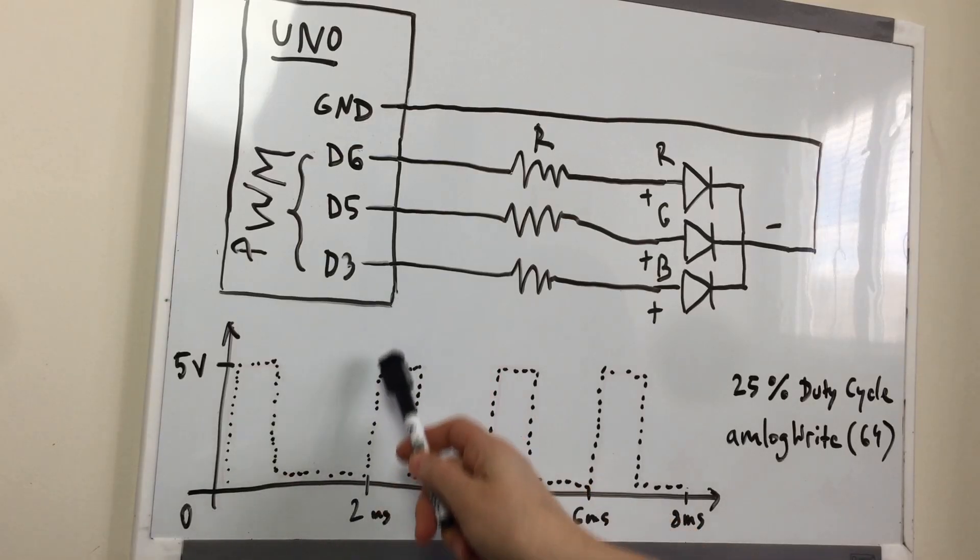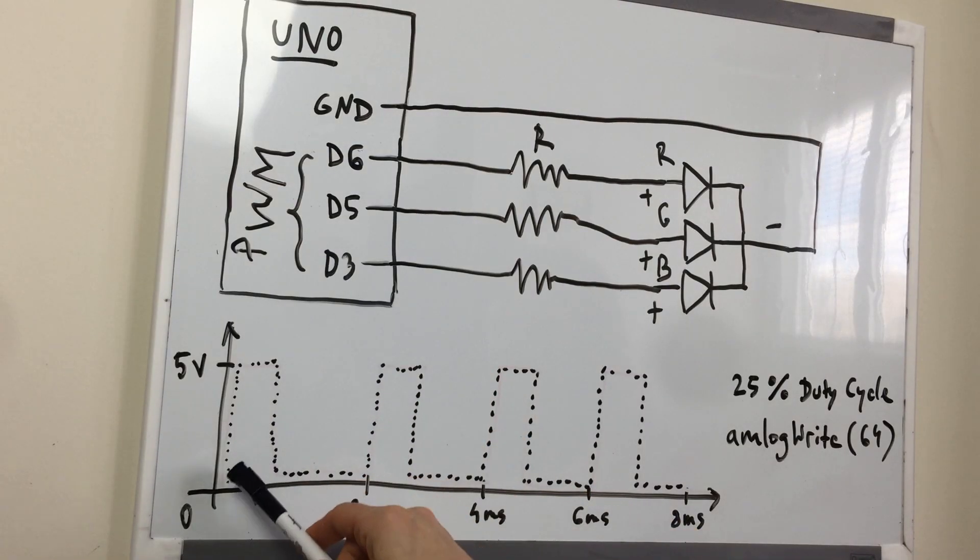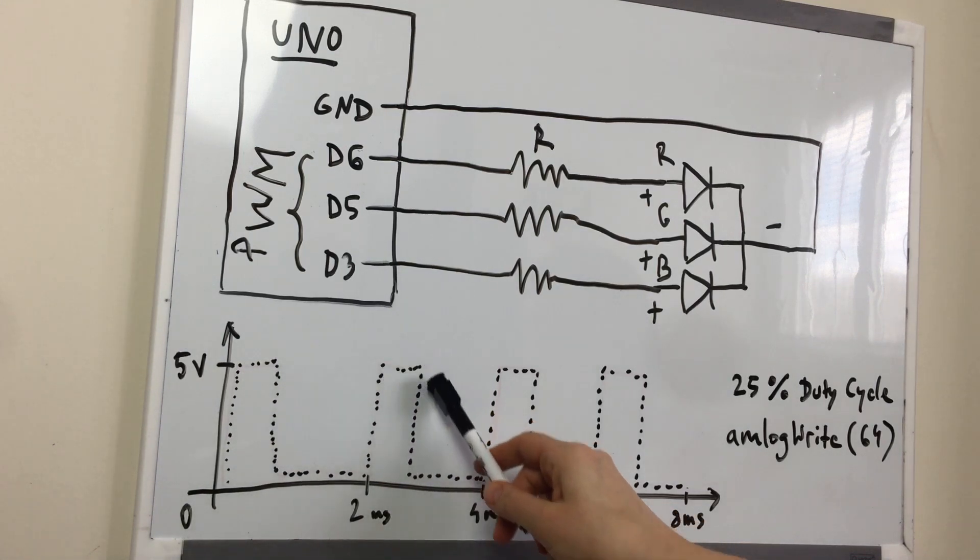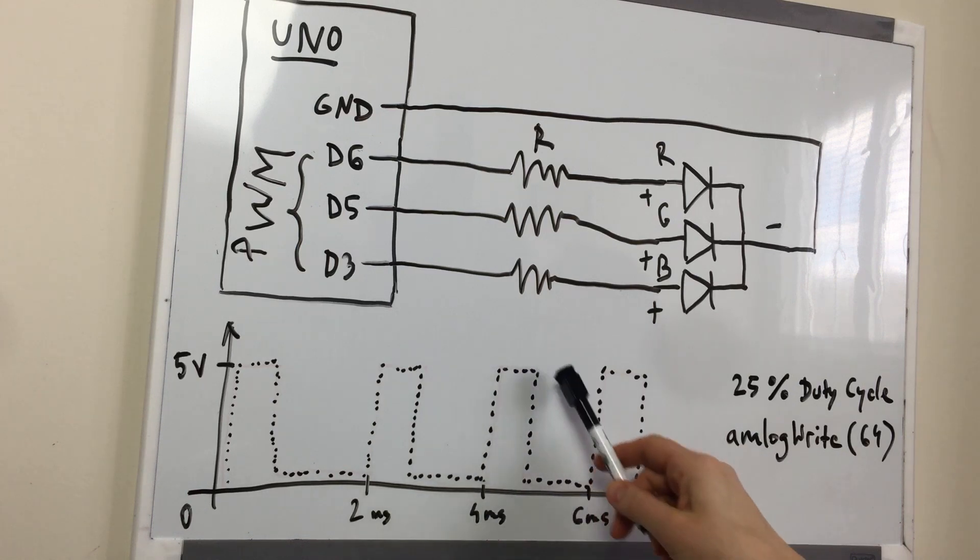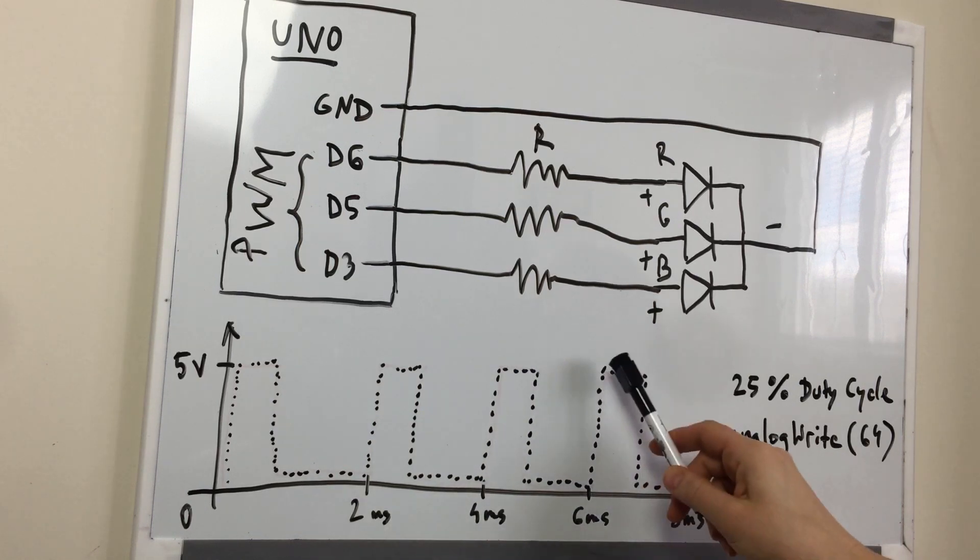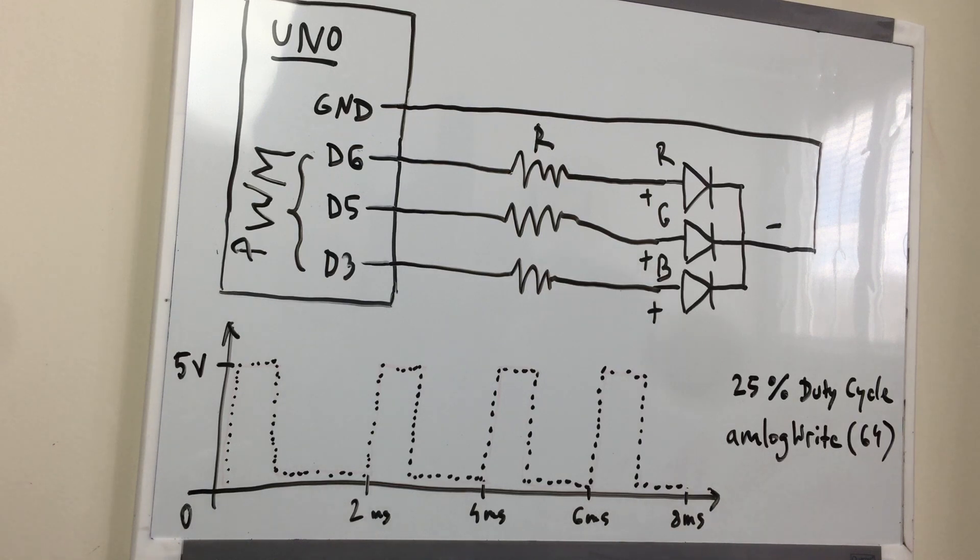Roughly every 2 ms, the PWM output will produce a pulse. The duration of on time is called the pulse width. Pulses will create a square wave. This on-off pattern can simulate voltages in between full-on, which is 5V, and off, which is 0V.